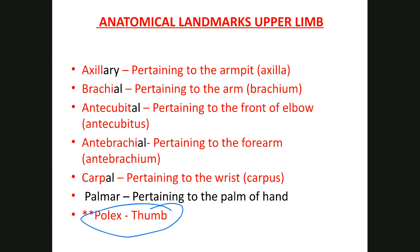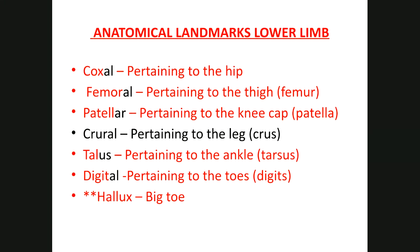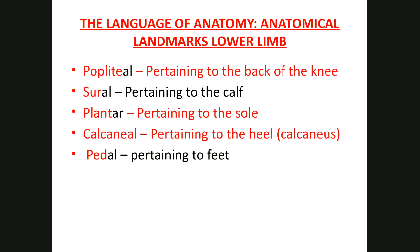Remember: pollux is the term for thumb. Acromial pertains to the point of the shoulder. Olecranal is the tip of the elbow. Femoral refers to the thigh — the area between the hip and the patella, which is the kneecap. Hallux is the term for toe. Calcaneal pertains to the heel. Many of these terms will be used together with directional terms on the test.